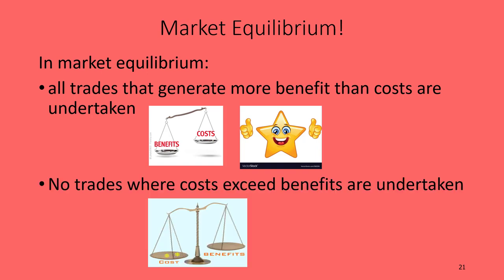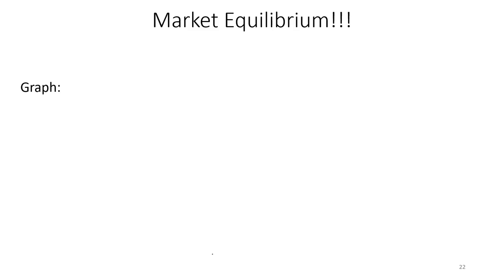At the same time, if we are in market equilibrium, no trades where costs exceed benefits are undertaken. No situations where the cost to the seller is higher than the benefit to the buyer are happening. This is what we call economically efficient — everything where benefits outweigh costs is happening, and no transactions where costs outweigh benefits are happening.